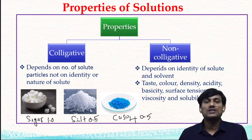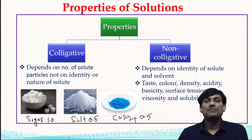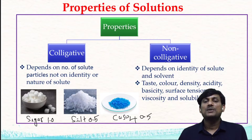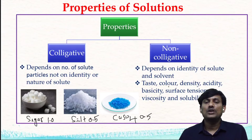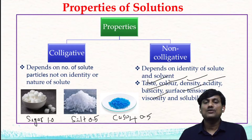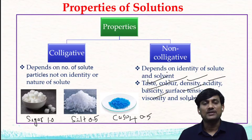So what is the difference between colligative and non-colligative properties? In colligative properties, the properties depend only on the number of particles, not on the nature of the solute. In non-colligative properties, the properties depend on the identity or nature of the solute and also the nature of the solvent. Non-colligative properties include taste, color, density, acidity, basicity, surface tension, viscosity, and solubility.